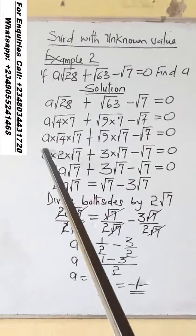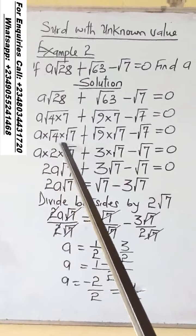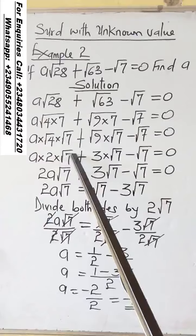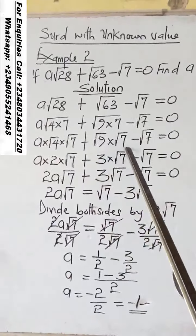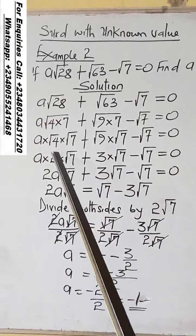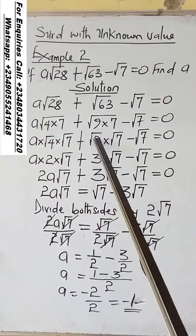So it will be A times root 4 times root 7 plus root 9 times root 7 minus root 7 equals 0. Root 4 is 2, root 9 is 3.